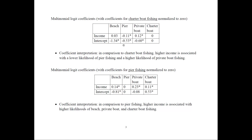I don't report standard errors or t-statistics; I just put stars if it's significant. The way we interpret those coefficients is in comparison to charter boat fishing, which is our base category. Higher income is associated with lower likelihood of pier fishing — it's a negative and significant coefficient — and higher likelihood of private boat fishing. So people with higher income would be more likely to do private boat and less likely to do pier fishing.